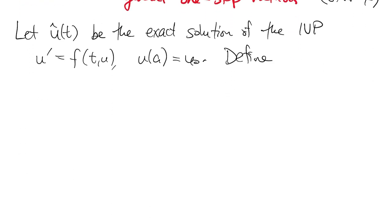We define a new quantity tau, which is a function of the step index and h, as the result of plugging the exact function into the difference formula that we used to derive the method in the first place.